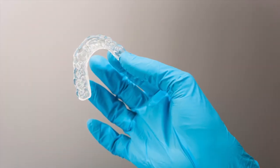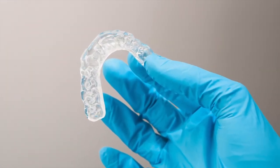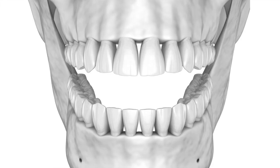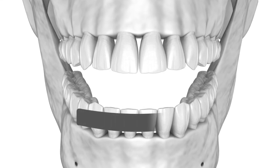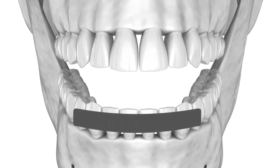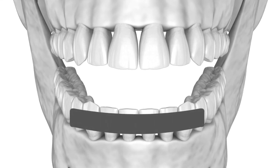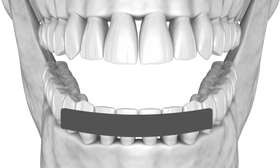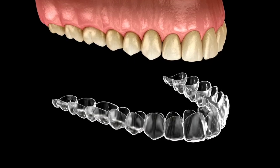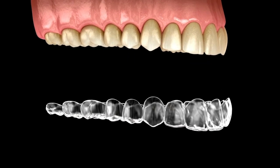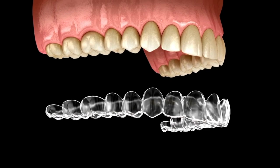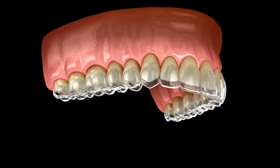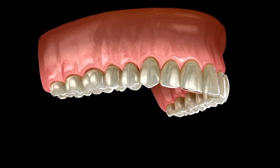A splint — what does it mean to splint something? To tie together, to support? No, it's to prevent movement. It's to basically hold something in place so it doesn't move out of place.